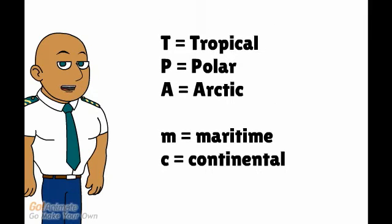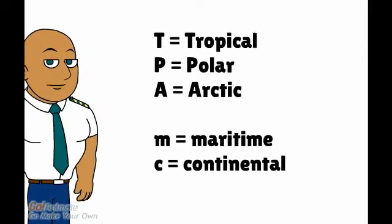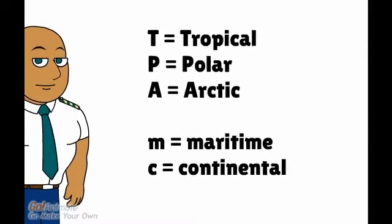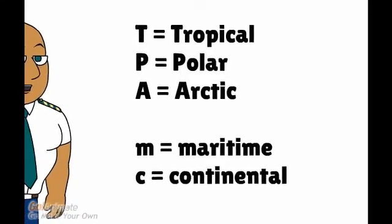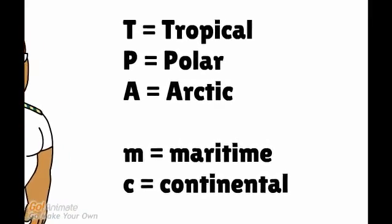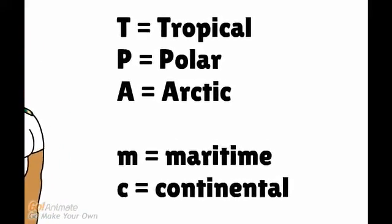The temperature depends on the geographical location of the source region. We distinguish tropical, polar, and arctic air masses that can be either maritime or continental. These letters can be combined — for example, the lowercase m and the capital T makes maritime tropical air.